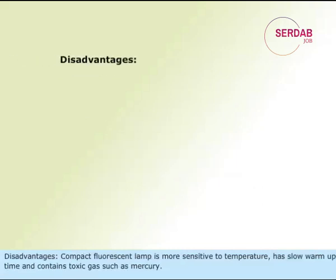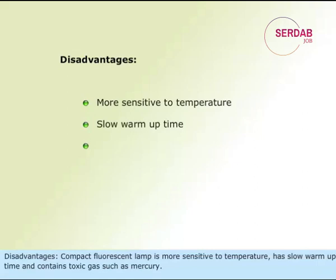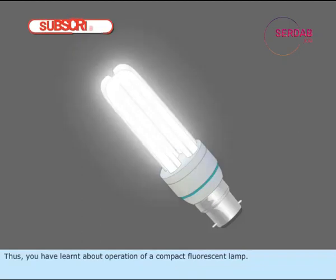Disadvantages: the compact fluorescent lamp is more sensitive to temperature, has a slow warm-up time, and contains toxic gas such as mercury. Thus, you have learnt about operation of a compact fluorescent lamp.